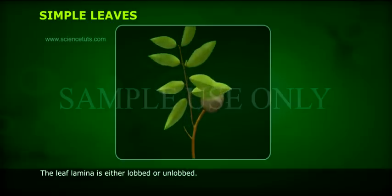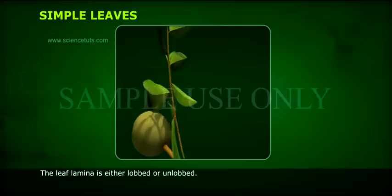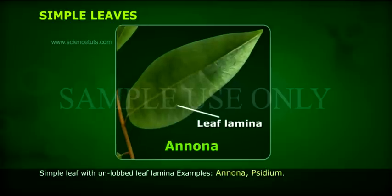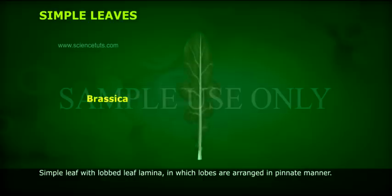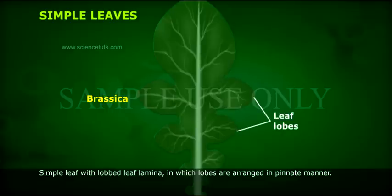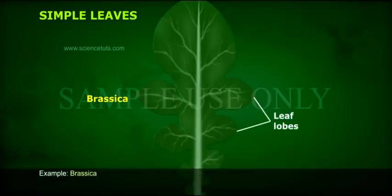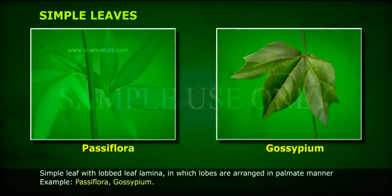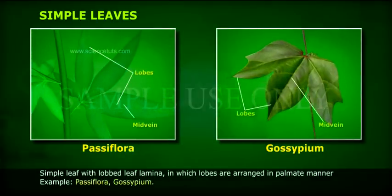Simple leaves: the leaf lamina is either lobed or unlobed. Simple leaves with unlobed leaf lamina — example: Anona. Simple leaves with lobed leaf lamina in which lobes are arranged in a pinnate manner — example: Brassica. Simple leaves with lobed leaf lamina in which lobes are arranged in a palmate manner — examples: Passiflora, Gossypium.